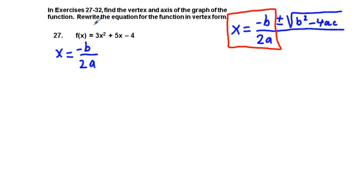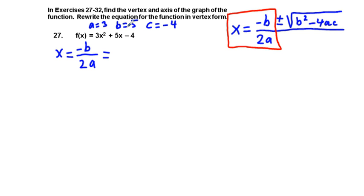x equals negative b over 2a. In this case, 3 is going to be a, so a equals 3. The quadratic term's linear coefficient b is equal to 5, and c, the constant term, is equal to negative 4. However, in this question, we don't need to use the value of c. So let's go ahead and put in negative b. If 5 is b, in our numerator we have negative 5. In our denominator we have 2 times 3, so we simplify to negative 5 sixths.